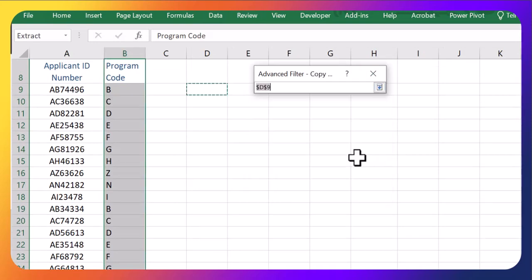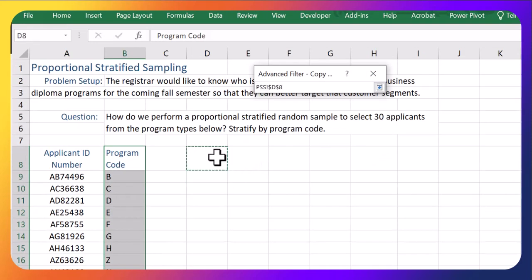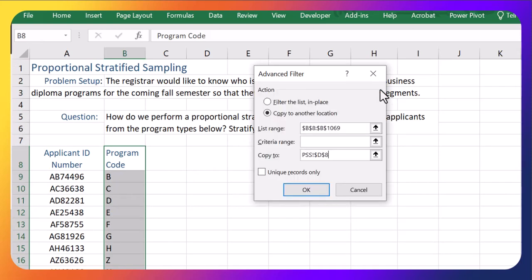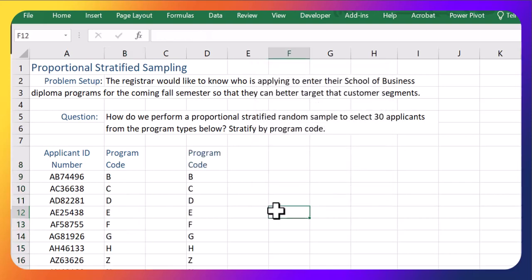I'm going to put this list that I want to generate right here in D8. And I want to output only the unique records there. This will tell me all of the unique program codes that there are. Instead of having to look through them, this will put that unique list right here. I'm going to put it in cell D8. Click OK. And there we go. So this is the list of unique program codes.